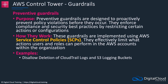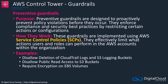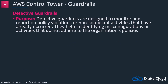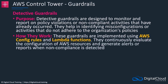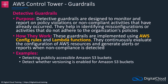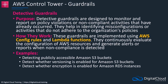Some examples of preventive guardrails are: disallowing the deletion of CloudTrail logs and S3 logging buckets, disallowing public read access to S3 buckets, requiring encryption on EBS volumes, and disallowing RDP or SSH access from the all-zeros IP, meaning any source address. Next we have detective guardrails, which are designed to monitor and report on policy violations or non-compliant activities that have already occurred — here we're talking about AWS Config. We can set how resources should be configured and ensure compliance using AWS Config rules and Lambda functions for evaluation and remediation. Examples include detecting publicly accessible S3 buckets, detecting whether versioning is enabled for S3 buckets, and detecting whether encryption is enabled for RDS instances.